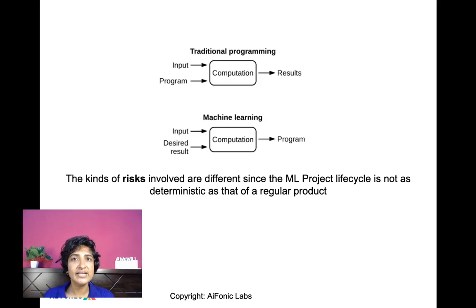So in traditional programming, we give an input and we write some code and give a program to the computer and what we get is some result. But when we come to machine learning, we give some input and we give the desired result, which is the data which contains some inputs and examples of what we expect to see. And out comes a program or a model. So there is some difference in paradigm here, as you can see.